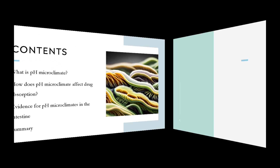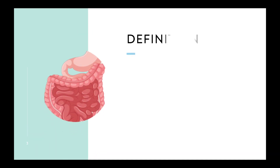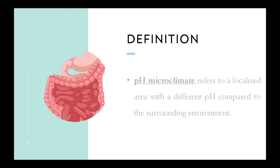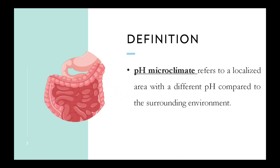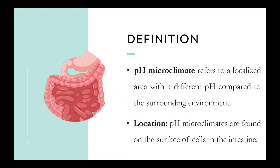First, we can see the definition of pH microclimate. pH microclimate refers to a localized area with a different pH compared to the surrounding environment. pH microclimates are found on the surface of cells in the intestine.